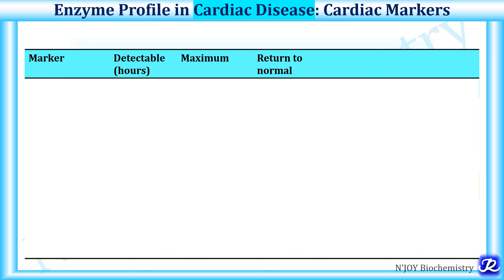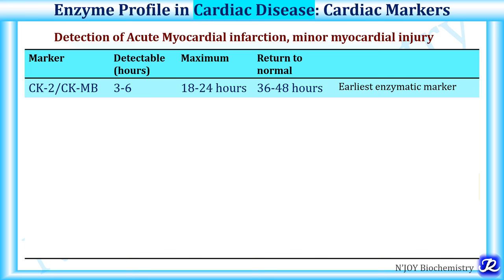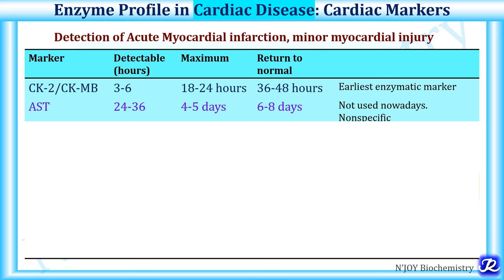Now let's see the enzyme profile in cardiac disease. This topic of cardiac markers will be explained in a separate video in more detail. These enzymes are useful for detection of acute myocardial infarction and minor myocardial injury. The first cardiac marker is CK-MB, which is detectable within 3-6 hours of myocardial infarction, reaches its peak at 18-24 hours, and returns to normal by 36-48 hours. AST is non-specific and can be increased in other conditions, so it is not used nowadays as a cardiac marker.